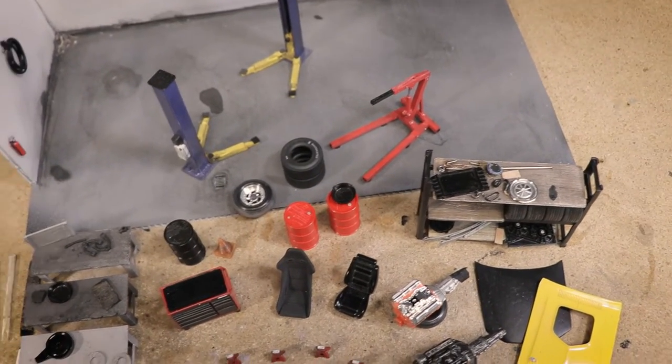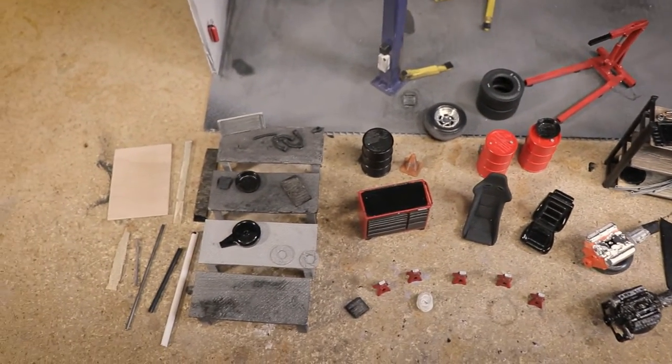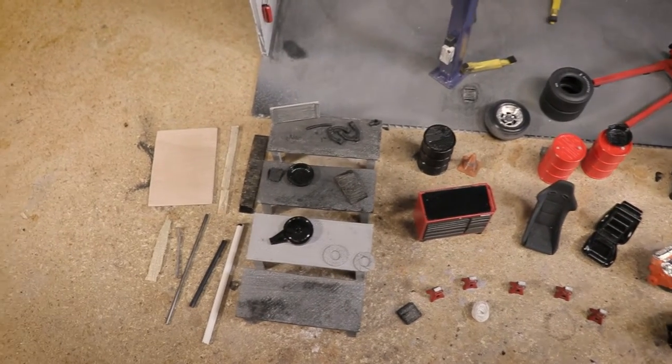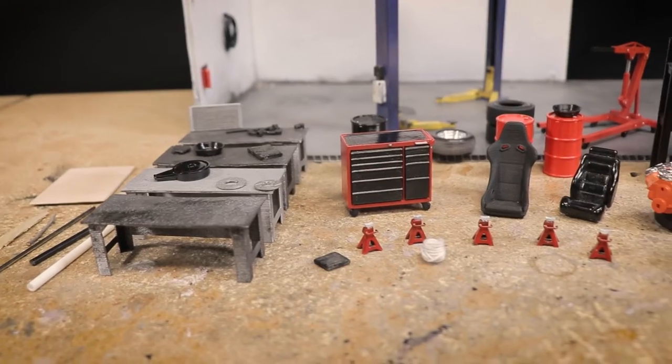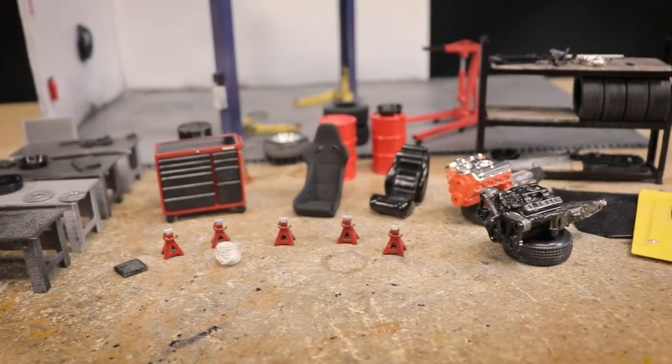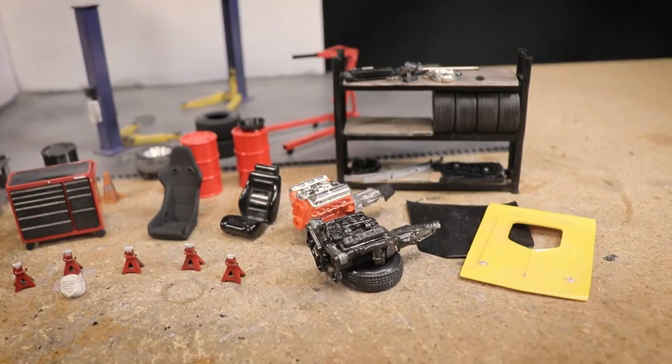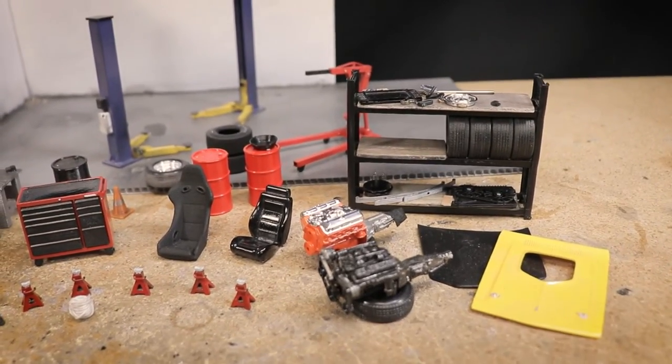Again, many of these items such as the workbenches, engine hoist, jack stands, and toolbox can be found for sale on our site. I've simply given them all a quick coat of paint and added a little grime. You'll see more of that process later on, but really there isn't much to it.